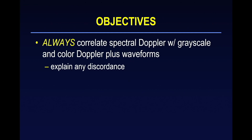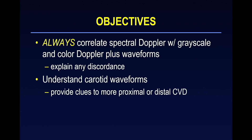We're going to show some examples of these situations. In order to keep yourself out of trouble by putting undue reliance on the chart, my basic recommendation is that you should always correlate your spectral Doppler findings with the grayscale and color Doppler plus the waveforms. If there is a discordance between your spectral Doppler criteria and what you see with grayscale, color Doppler, and the waveforms, you need to explain that discordance — and by doing so, this is going to keep you out of trouble.